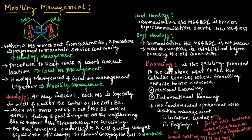Now let us understand roaming. Roaming is the facility provided to the cell phone user to use cellular service when travelling outside the home network. There are two types of roaming: national roaming and international roaming.